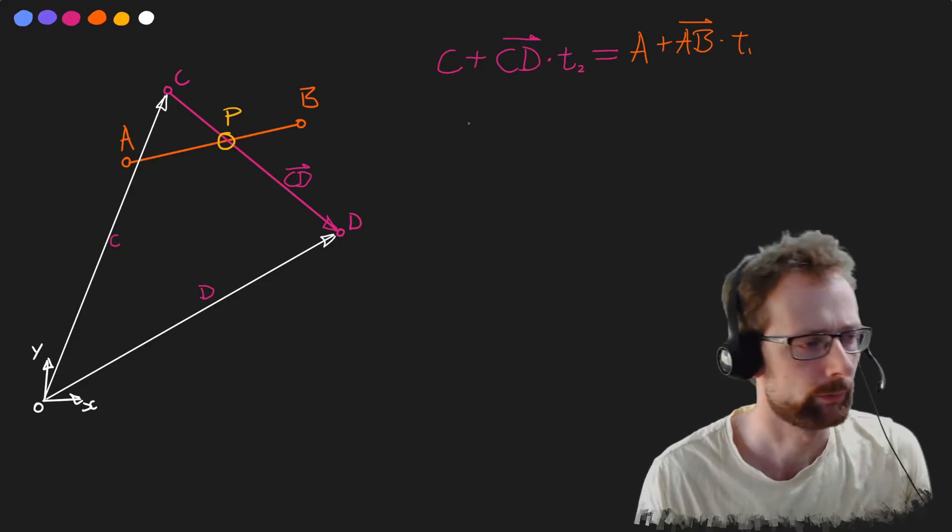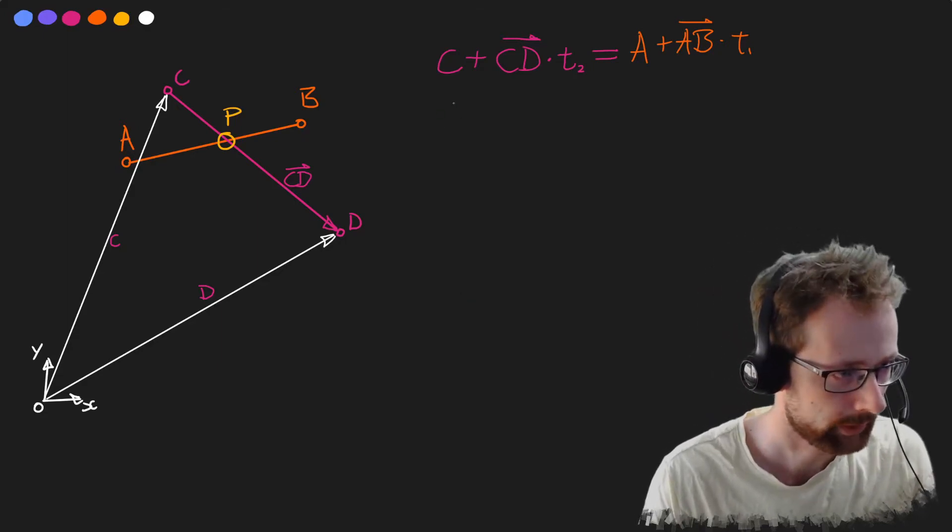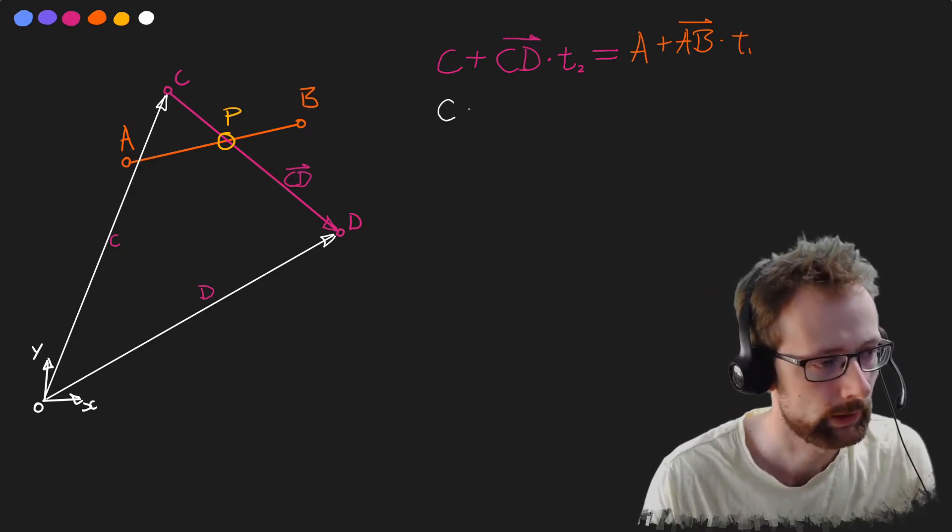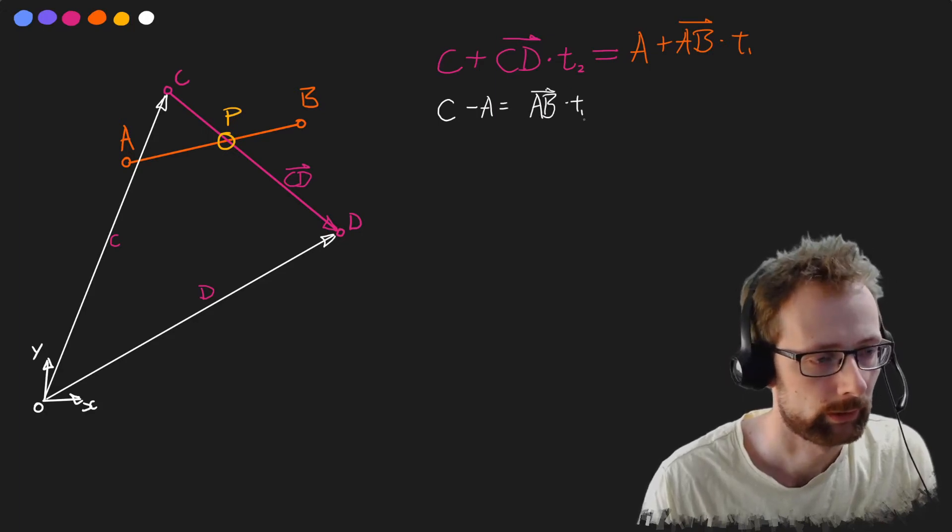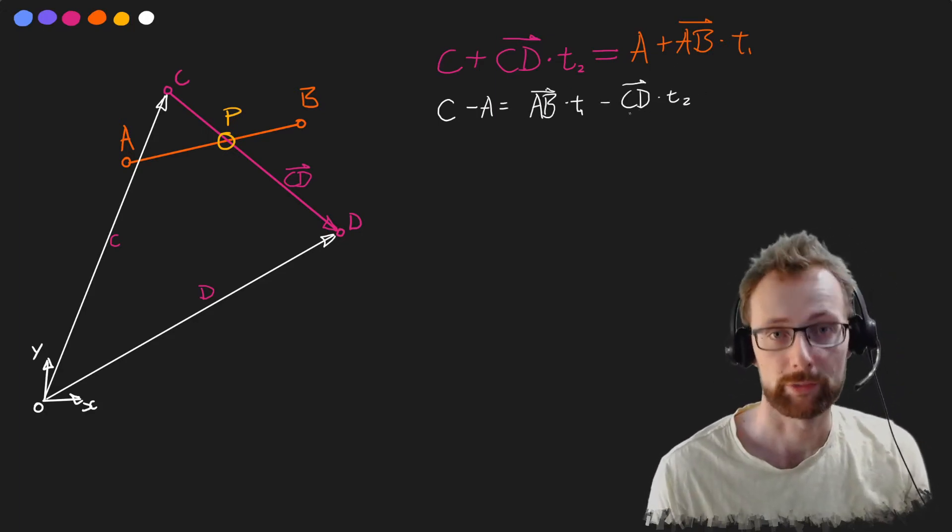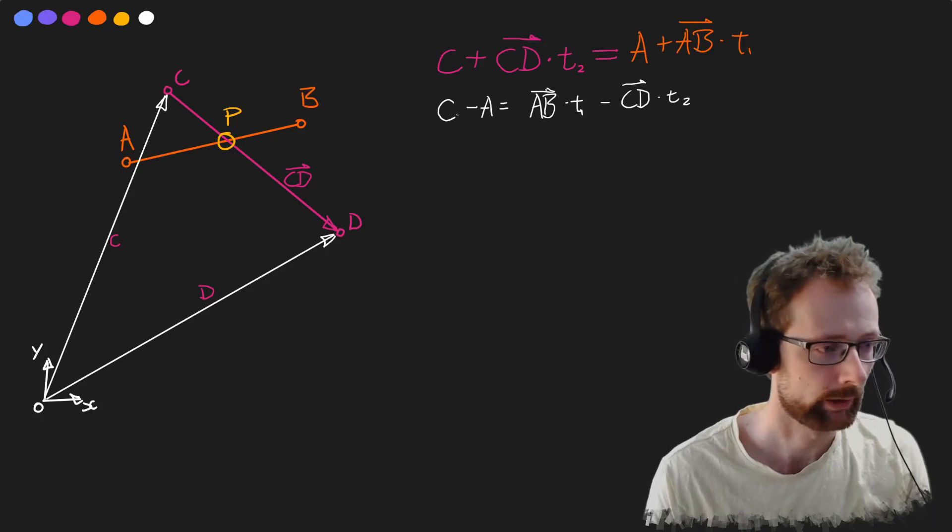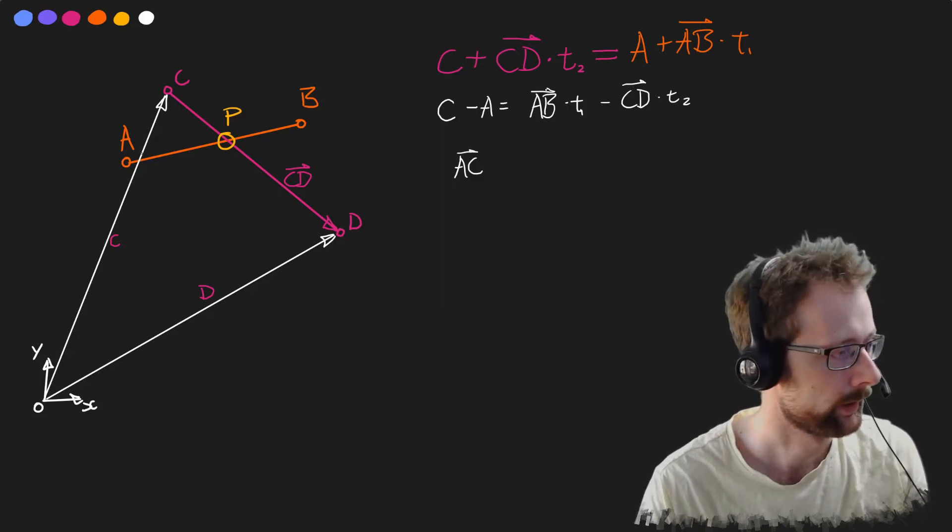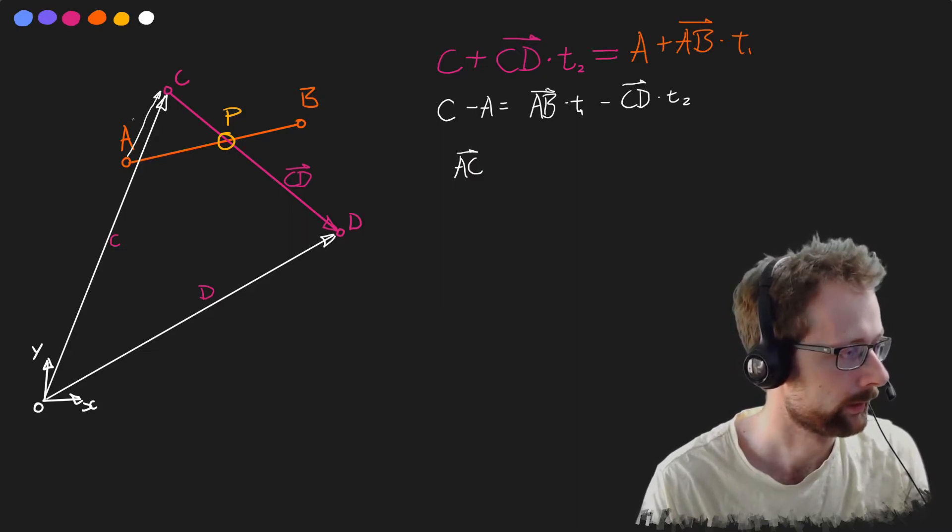Okay so the first step is to do some rearranging. I'm going to switch over to white. Let's go c. The first thing I'm going to do is say that c minus a is equal to ac, and that's this vector here from a to c.